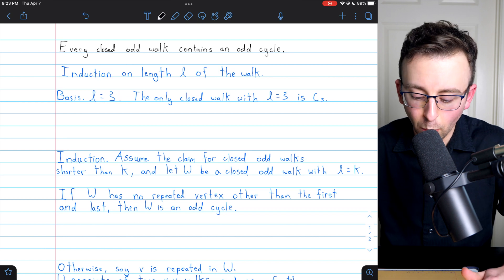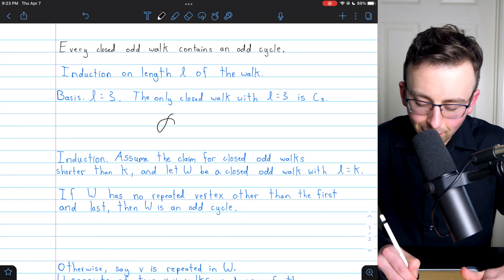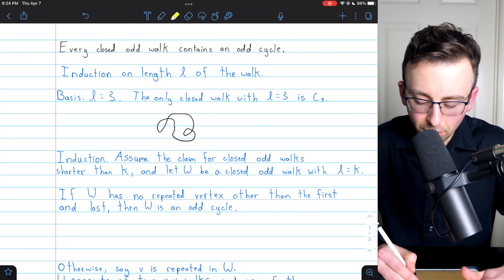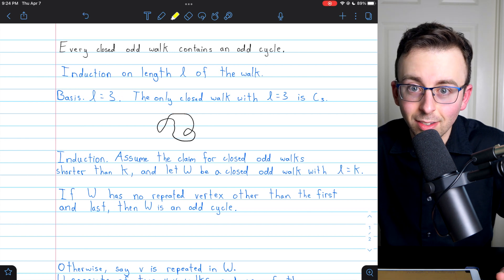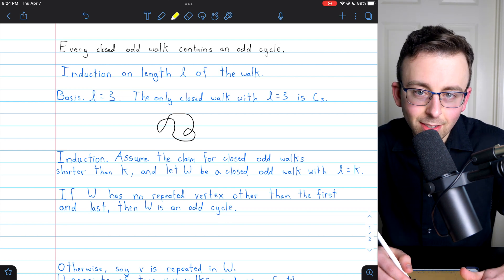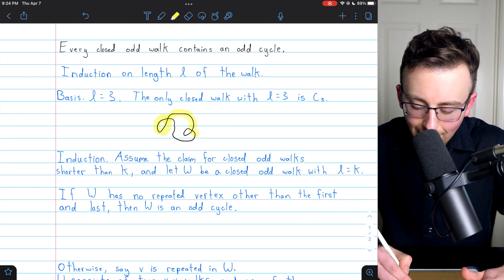Just give you the intuition before we see the proof. A closed odd walk might look something like this. It's intersecting itself a couple times since walks can repeat vertices. And what you have to notice is that a closed odd walk can be broken down into cycles.